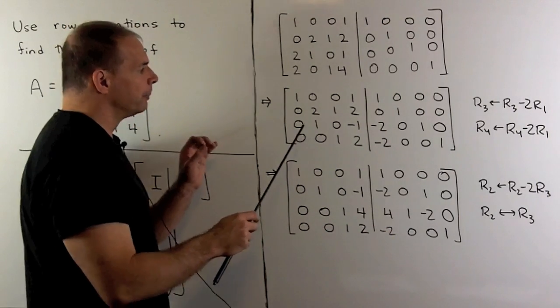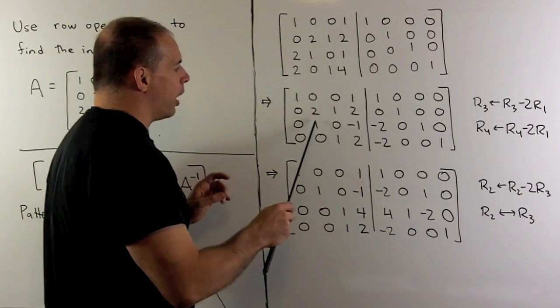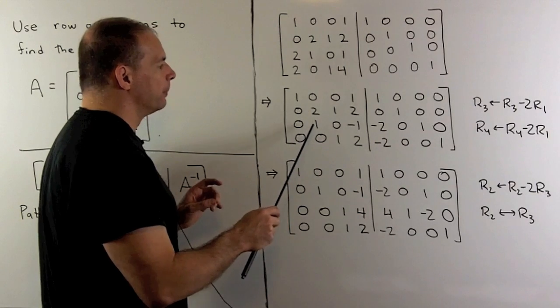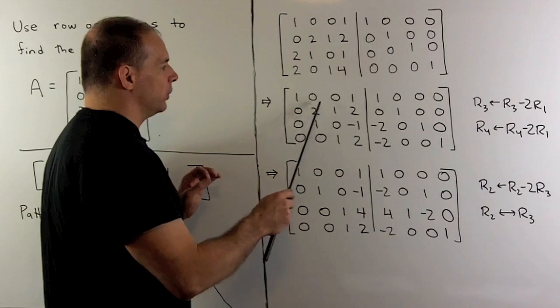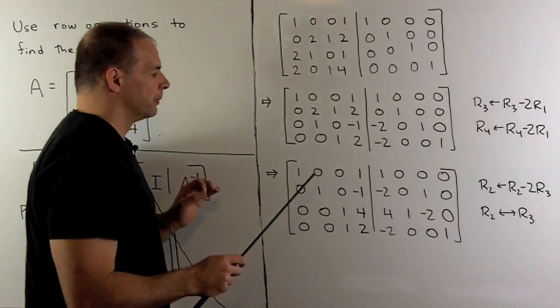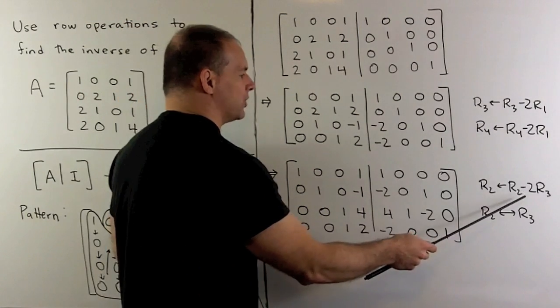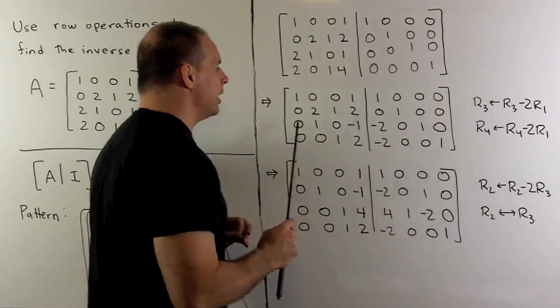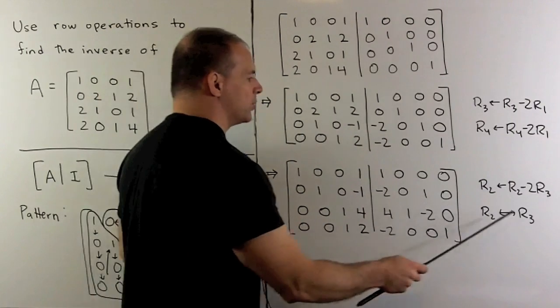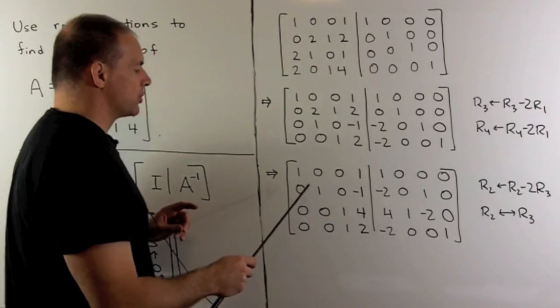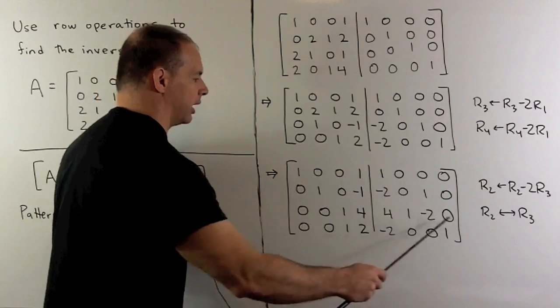Now here we already have our one that I want in the next diagonal entry, so I'm going to eliminate the two here and then we'll do a switch. To do that, I'm going to take row two, replace it with row two minus twice row three. Then we're going to switch row two and row three. So that's going to get these two rows here like this.